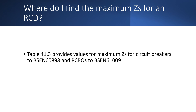Table 41.3 provides values for maximum ZS for circuit breakers to BS EN 60898 and RCBOs to BS EN 61009. For example, a 32 amp type B device, the maximum ZS is 1.37 ohms. However, if we're working on a TT system, it is possible that the ZE alone will be greater than this figure. So how can this be the maximum ZS?